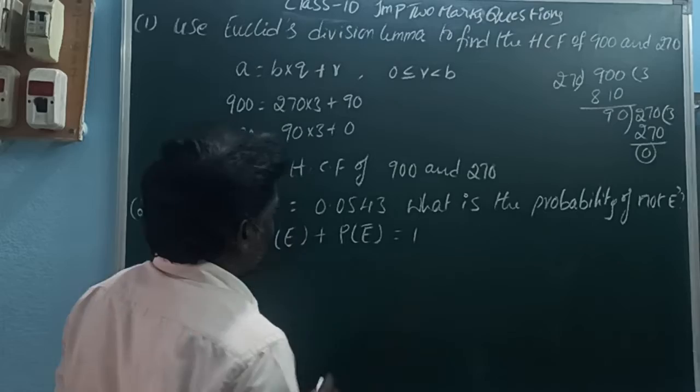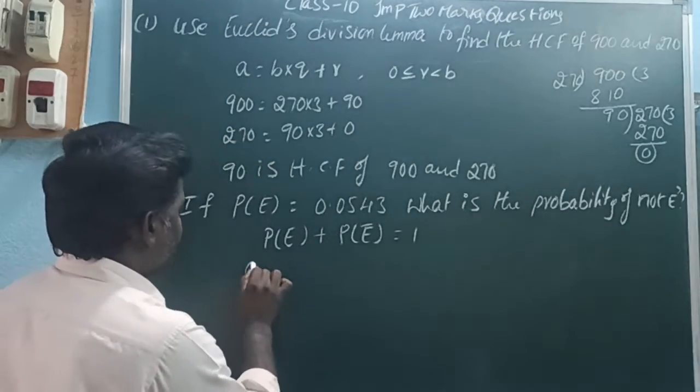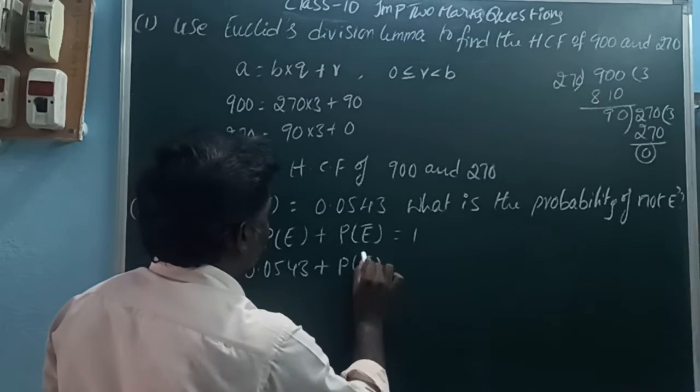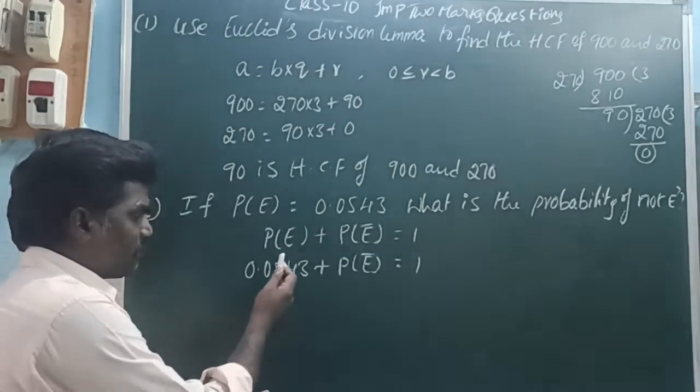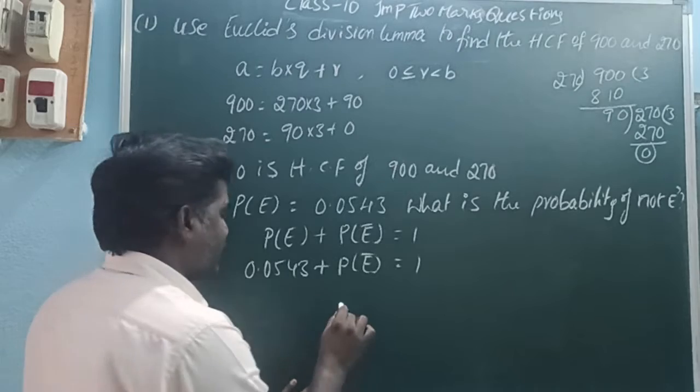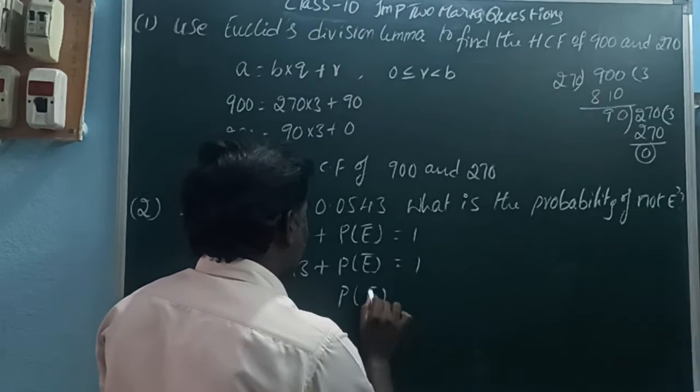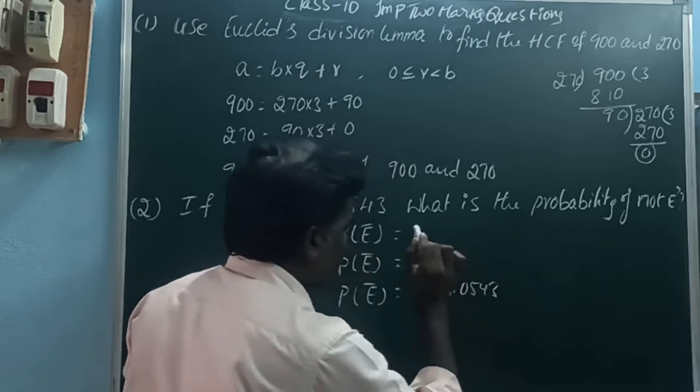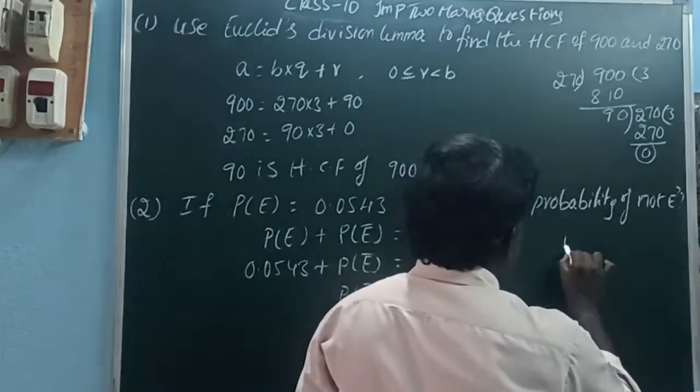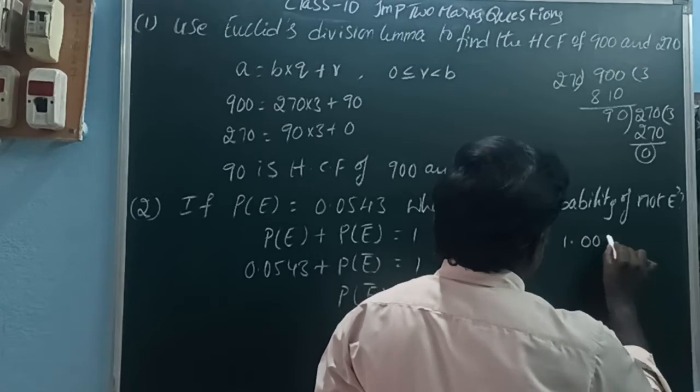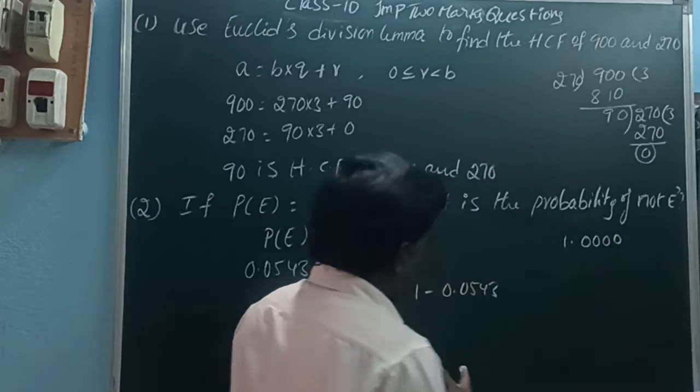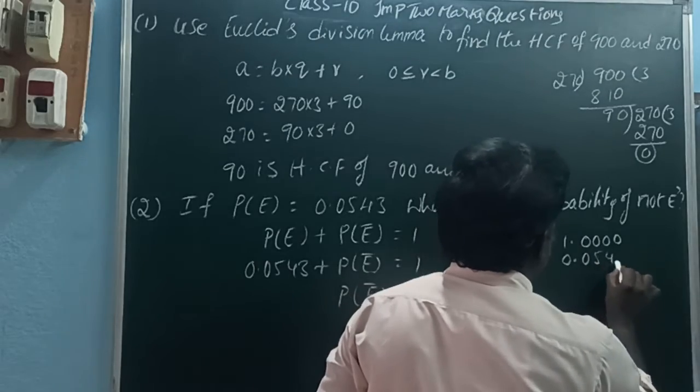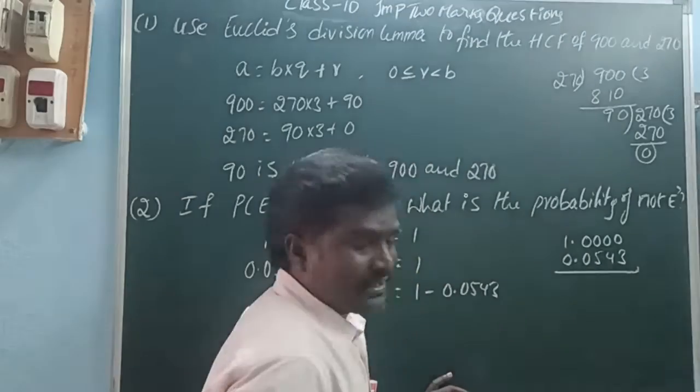This equals 1. So P(E) = 0.0543, plus P(E̅) = 1. Moving the plus to the other side, P(E̅) = 1 - 0.0543. From 1, we can subtract. We can write 1 as 1.0000.